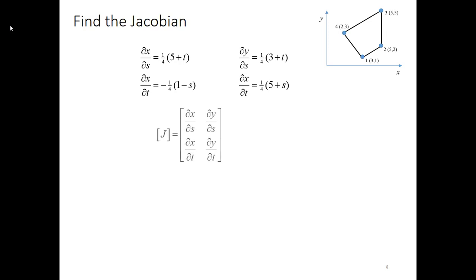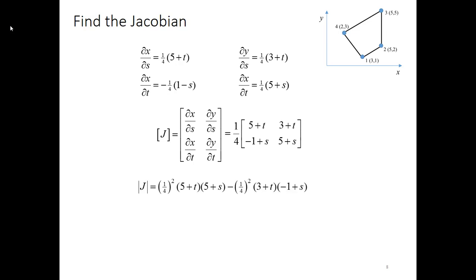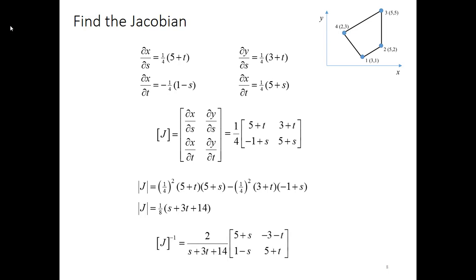Here are the four terms we've defined. We plug them in to get the Jacobian matrix itself. We also want to find the determinant of the Jacobian. Be careful: when taking the determinant of a matrix with a coefficient out front, that coefficient is multiplied by every term, meaning for a 2×2 matrix you'd need to square it if left outside. It's safer to bring it inside before finding the determinant. Our expression for the determinant simplifies to 1/8 · (S + 3T + 14). That allows us to calculate the inverse of the Jacobian, where we swap the two diagonal terms, put a negative sign in front of each off-diagonal term, and divide by the determinant.